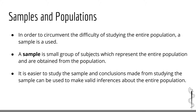It is much easier to study a sample, and the conclusions made from studying the sample can be used to make valid inferences about the entire population. However, the consequence of using a sample is that bias or error can occur when the sample is not representative of the target population. Specifically, the kind of bias that occurs in this situation is selection bias — if you thought selection bias, you are correct.